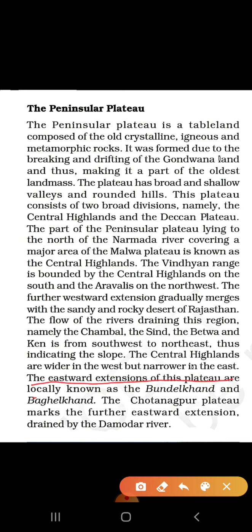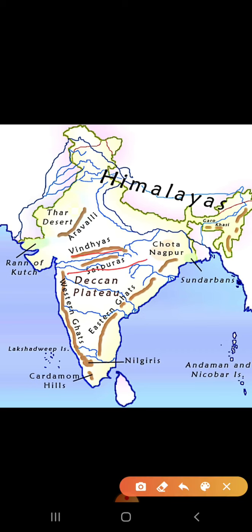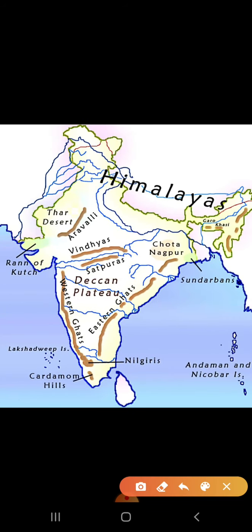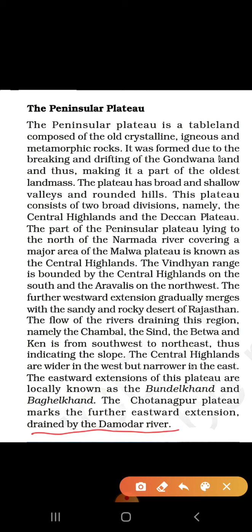The eastward extension of this plateau is locally known as Bundelkhand and Baghelkhand. The Chhota Nagpur Plateau marks the further eastward extension, drained by the Damodar river. The Chhota Nagpur Plateau generally covers parts of around five states, including Jharkhand and nearby states such as Bihar, West Bengal, and Odisha. On the map, this is the Chhota Nagpur area, and the Damodar river drains this region.